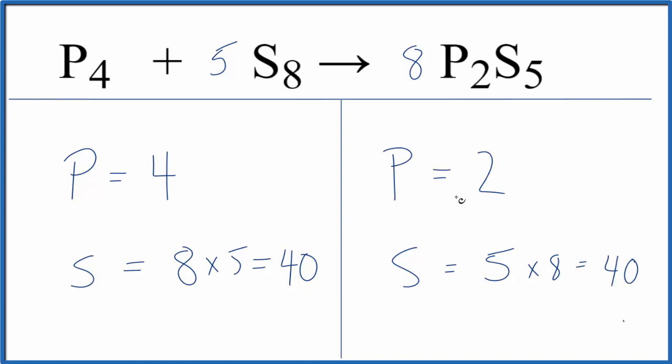And then let me update my phosphorus here. I have two times eight. That equals 16. And if I put a four right here, four times four, that equals 16 as well.